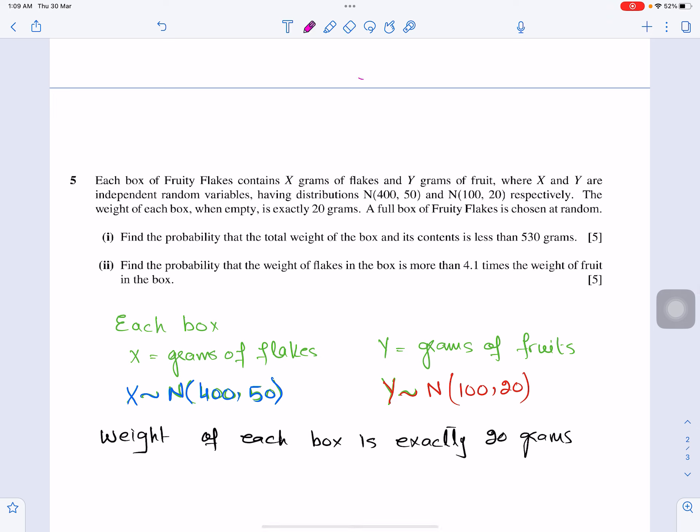If you see in the question, they are talking about a box of fruity flakes, and in that there are x grams of flakes and y grams of fruit, and x and y are independent variables, and the distribution is such that 400 mean and 50 variance is for flakes, and 100 mean and 20 variance is for fruit, which I have written here. I have just written here in the mathematical notation, which is normal distribution. And what else is given here in the question that the weight of each box, when it is empty, because these things are put in the box, the weight of the box is 20 grams exactly. So I have written here in black weight of each box is exactly 20 grams. A full box of fruity flakes is chosen at random.